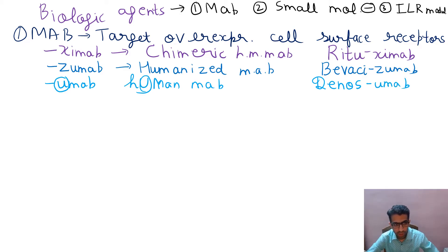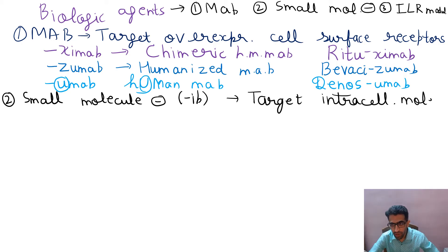Great, so we have finished monoclonal antibodies. Now coming on to the second part, that is small molecule inhibitors. Basically here small inhibitors there is ib. They basically, as the name says, target intracellular molecules because they are small molecule inhibitors.